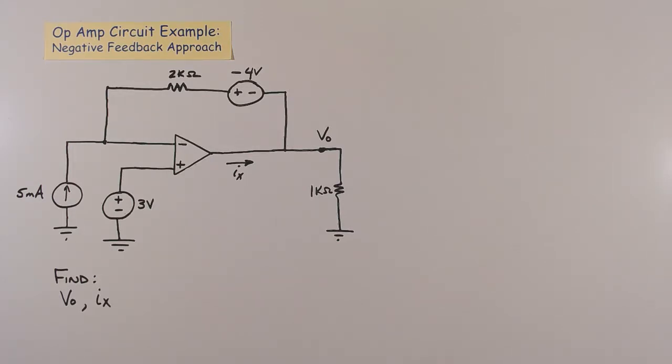Let's review the op-amp circuit decision tree to determine what approach we should take. The first question we ask is, does this op-amp circuit have negative feedback?